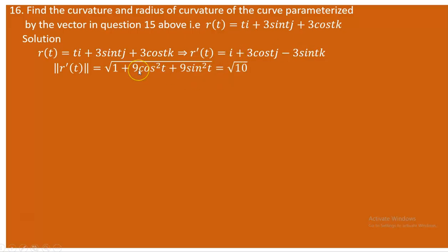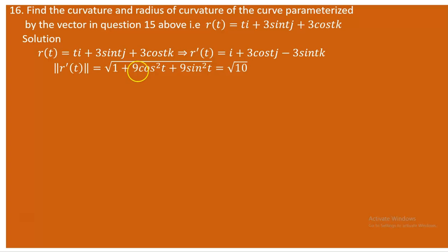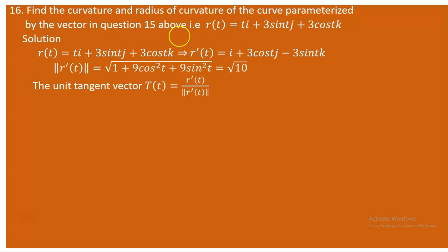We can take 9 as a common factor from the last two terms, giving 9(cos²(t) + sin²(t)) = 9. So the magnitude becomes √(1 + 9) = √10. This is the norm of the derivative.